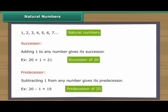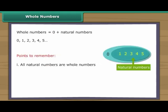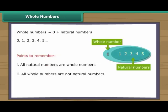Interesting question: What is the largest natural number? Whole numbers include zero and all the natural numbers. Points to remember: One, all natural numbers are whole numbers. Two, all whole numbers are not natural numbers. Three, there is no largest whole number.